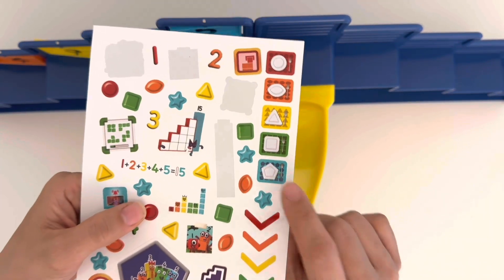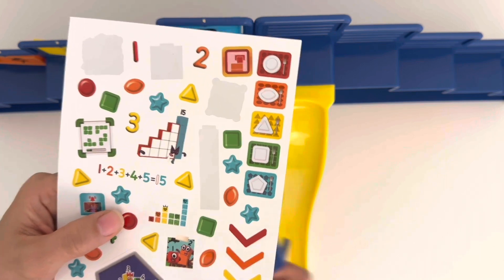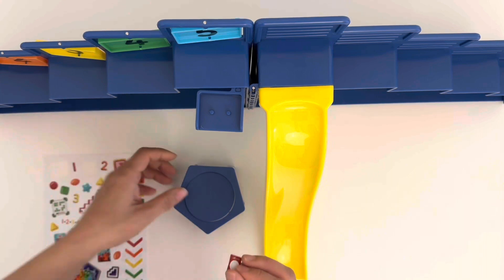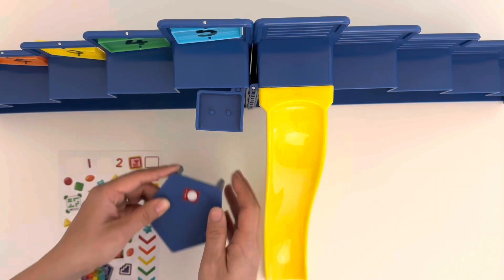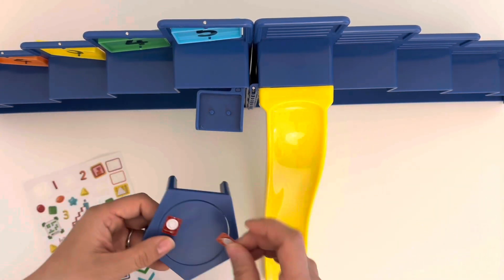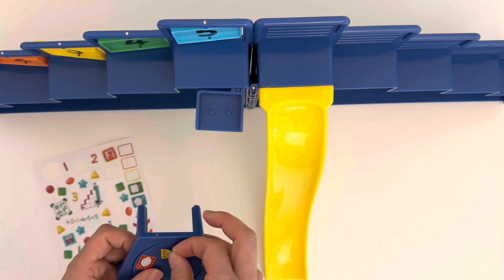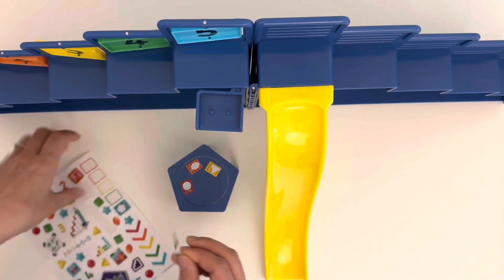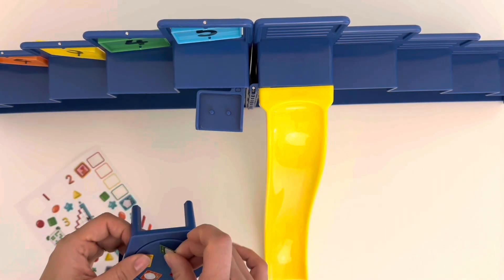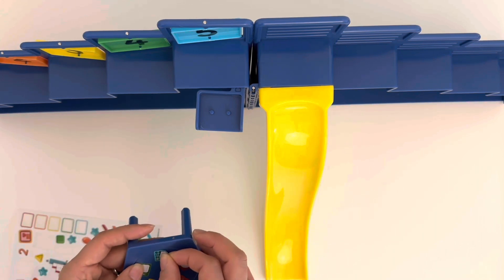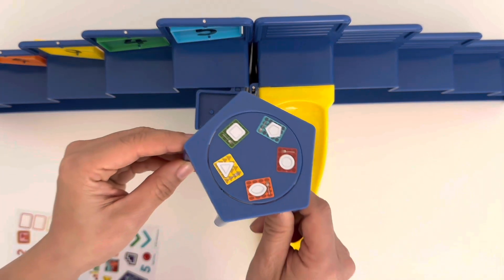We have some more stickers of dinner settings. We can put these on the table, on the side that's not got the computer on. Let's add these to the table. Each character has their own place setting in their own color and their own shaped plate. There we go, dinner's nearly ready.